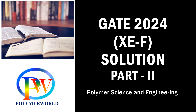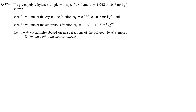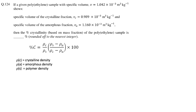So let's start with the first question. In question 124 we need to calculate the percentage crystallinity of a polyethylene sample. A specific volume of the sample and crystalline and amorphous fractions is given. As we know, we can calculate the percentage crystallinity of a polymeric material using densities of the amorphous and crystalline phases. But here a specific volume is given.